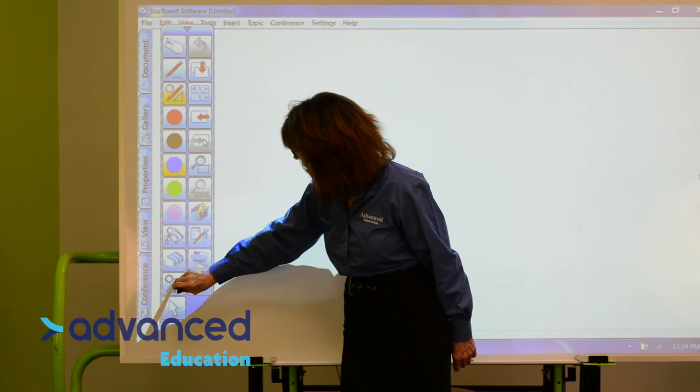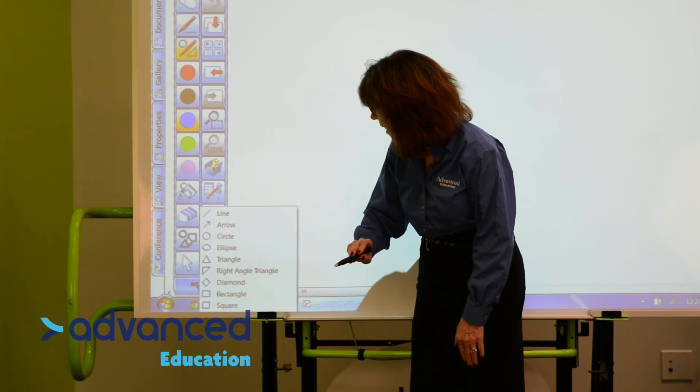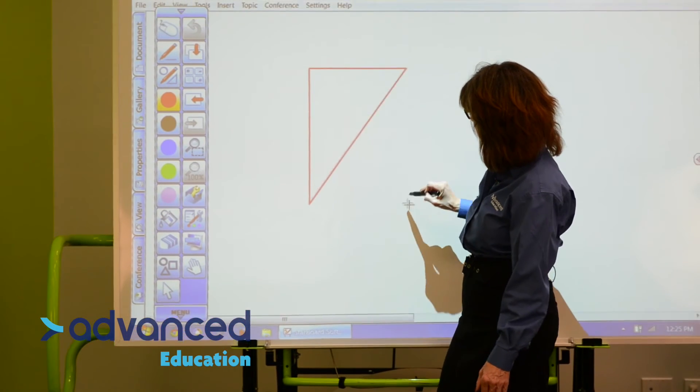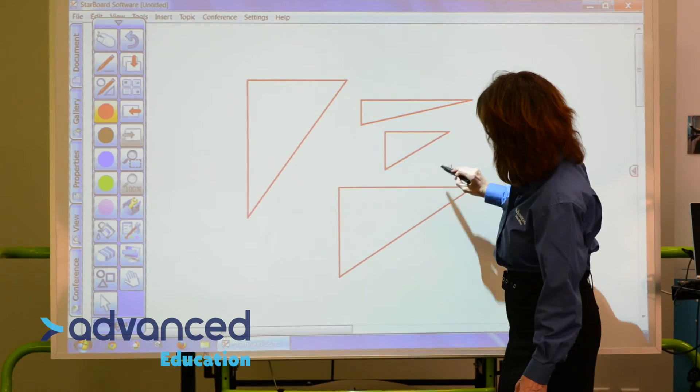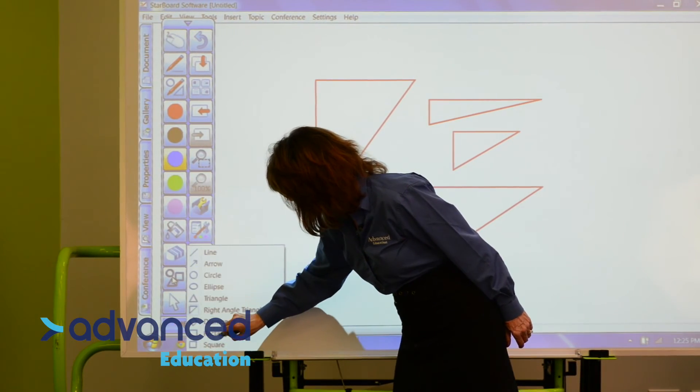So let's look at the shapes now. There are lines, arrows, circles, ellipses, triangles. Let's do a right-angle triangle. Or several right-angle triangles. Let's change to blue and do some rectangles.